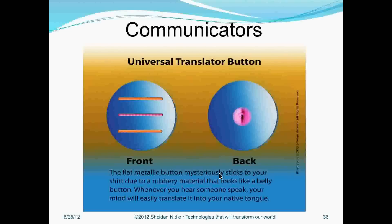Another device: communicators. Communicators are devices which use the impulses in our brain. Our brain, when it comes to language, produces basic electrical signals which come down to, looking through our visionary system, various forms of shapes and sizes. You put them together, they create vowels and consonants which make up words, which make up sentences, which make up basic concepts — what we want to talk about. This translator goes into everybody's brain, because fully conscious beings and limited conscious beings have the same basic prototype of shapes and sizes. So the flat metallic button will mysteriously stick to your shirt due to a special rubbery substance — you can see that on the back there.